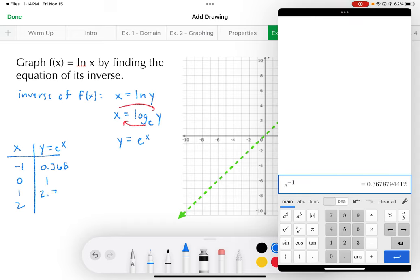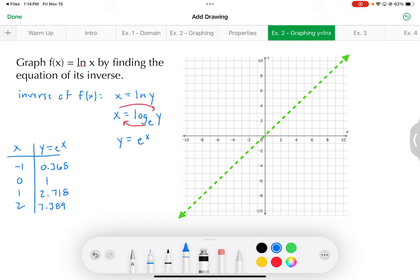E to the first, we know that. That's 2.718. And then e to the second, 7.389. All right, go ahead and plot all those. Obviously, you'll have to estimate their values or their placements.